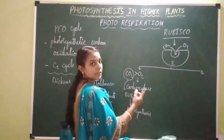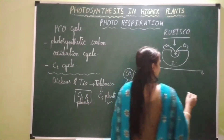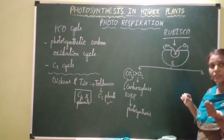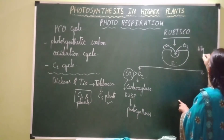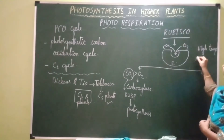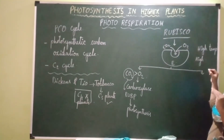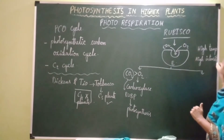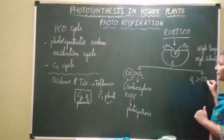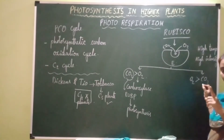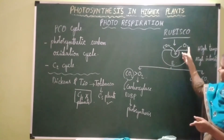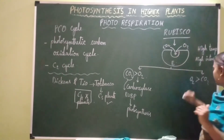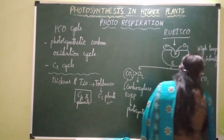Rubisco functions as oxygenase under high temperature conditions and under higher light intensity when the concentration of oxygen is more inside the cell than carbon dioxide. Under these conditions, Rubisco shows more affinity towards oxygen, and oxygen binds with the active site leading to oxygenation — the enzyme functions as oxygenase.